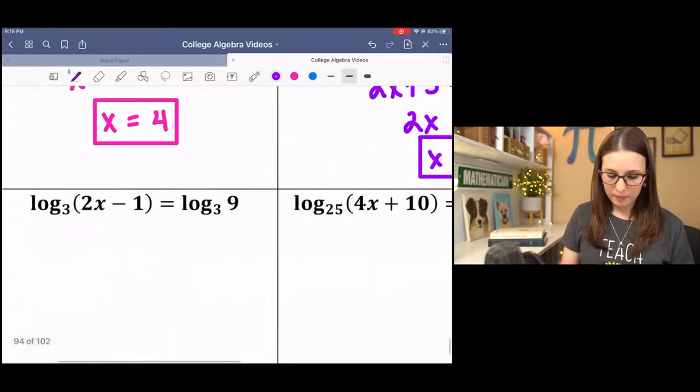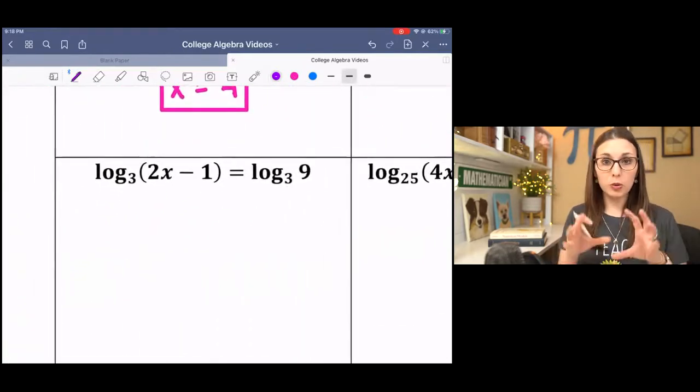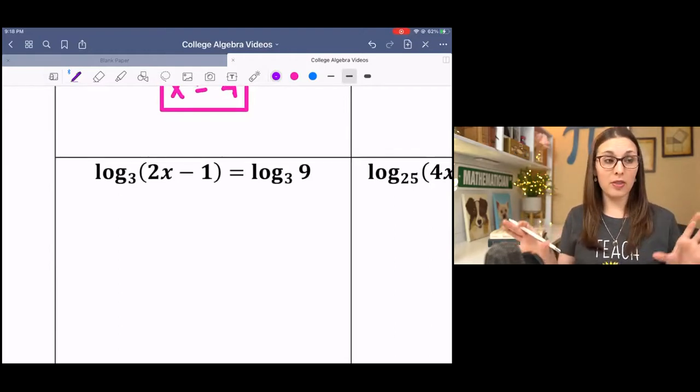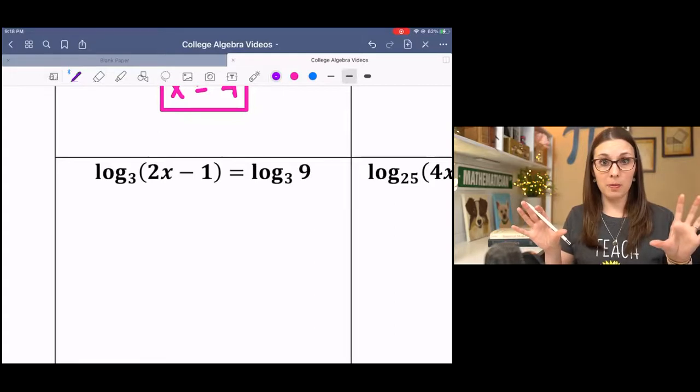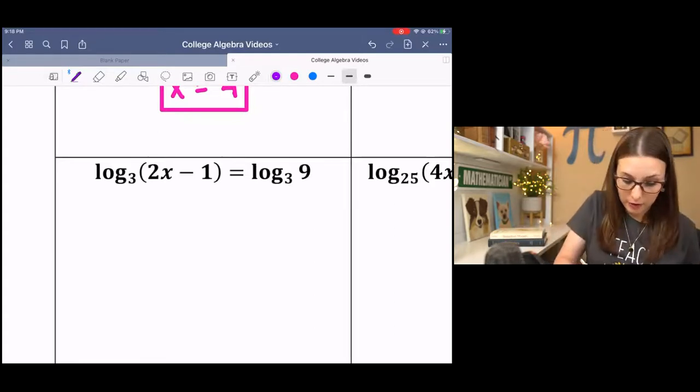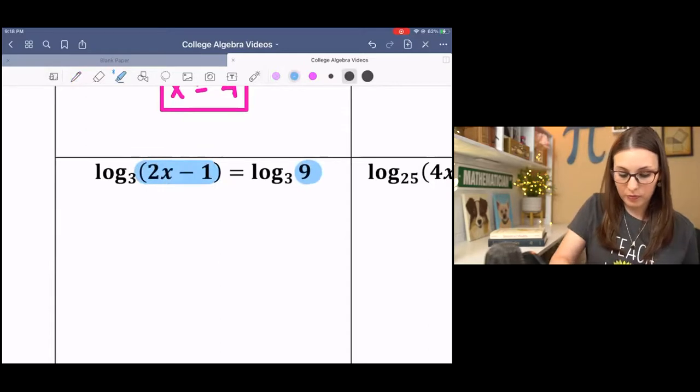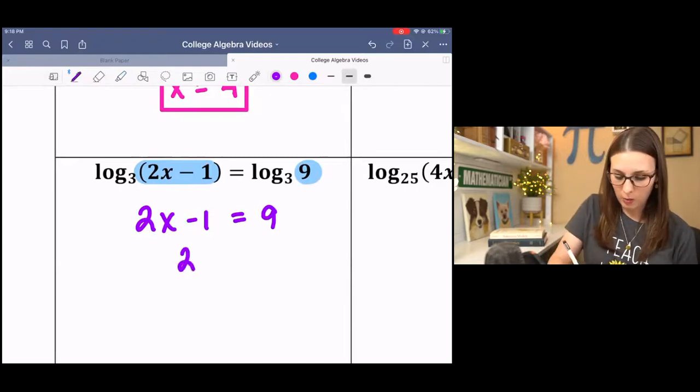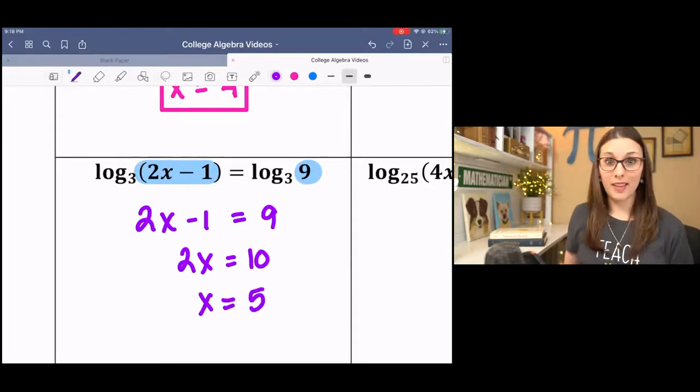Logs are the same. If you have two logs on different sides of the equation with the same base, then if the bases are the same and the expressions are the same, then these have to be the same also. And that's what we're solving. Just that piece, since everything else is the same. Add 1. Divide by 2. And that's it.